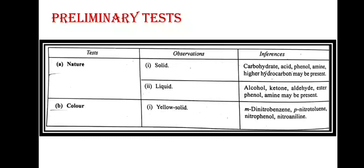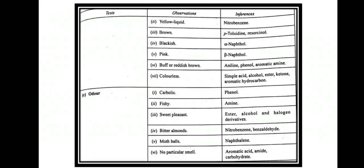After noting the nature, we will note down the color of the compound. If it is a yellow solid, then meta-dinitrobenzene, para-nitrotoluene, nitrophenol, or nitroaniline may be present. If it is a yellow liquid, nitrobenzene may be present. If it is brown, para-toluidine or resorcinol may be present. If it is blackish, alpha-naphthol; pinkish, beta-naphthol; buff or reddish brown indicates aniline, phenol, or aromatic amine. If the compound is colorless, simple acid, alcohol, ester, ketone, or aromatic hydrocarbon may be present.